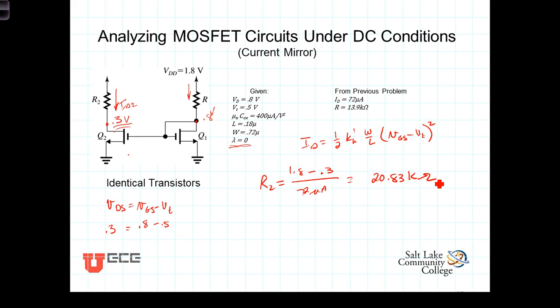And we need to ask ourselves, does that make sense? Well, if the currents are the same, then the larger resistor would result in a larger voltage drop, which should then give us a voltage here less than the voltage here. And sure enough that's exactly what we've got. We do expect R2 to be bigger than this resistor here because the voltages at the two drains are different voltages.